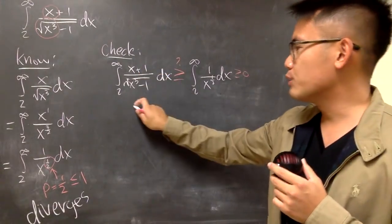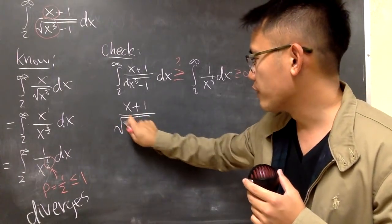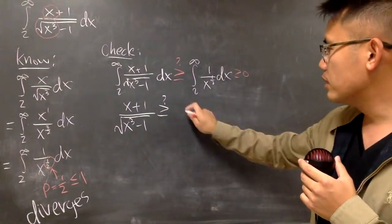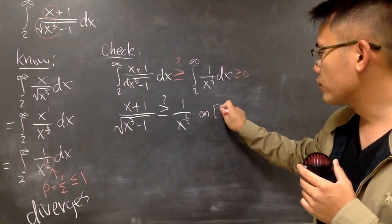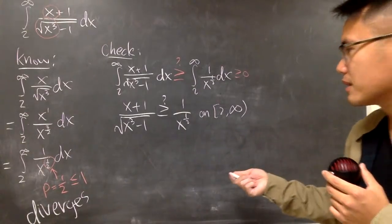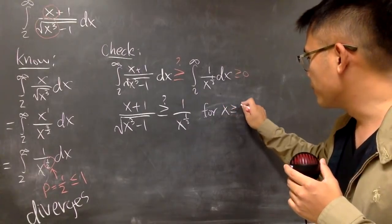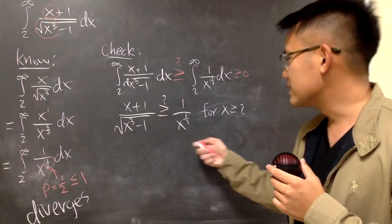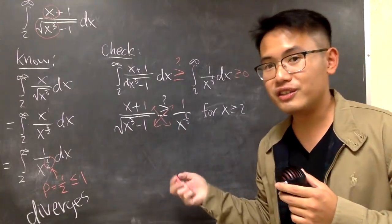Let's do the algebra check. Now we just have to worry about the function part. This is x plus 1 over square root of x cubed minus 1. I want to see if this is bigger than or equal to 1 over x to the one-half on the interval 2 to infinity. Or you can also write for x is greater than or equal to 2. Perhaps I will do that, for x is greater than or equal to 2, because we go from 2 to infinity. Everything is positive, as I indicated here, so I can cross multiply without changing the inequality symbol.